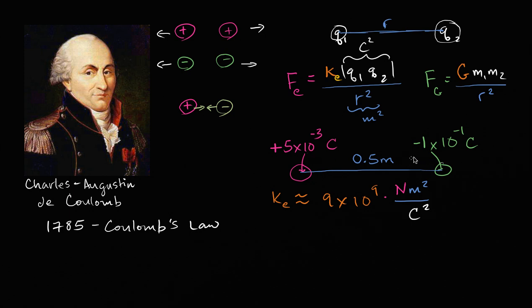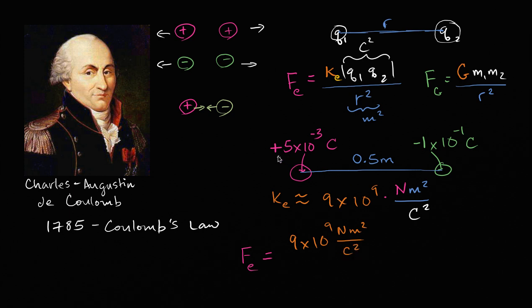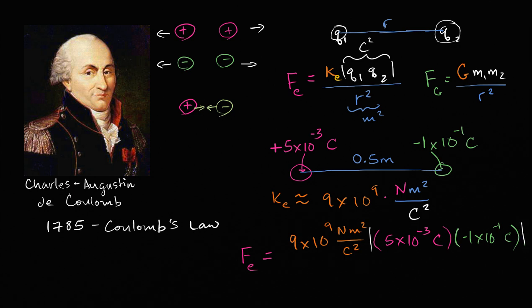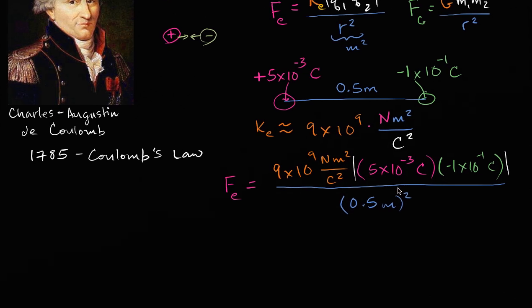Let's apply it to the example. I encourage you to pause the video and try it yourself. It's going to be 9 times 10 to the 9th Newton meters squared over Coulombs squared, times 5 times 10 to the negative 3 Coulombs times negative 1 times 10 to the negative 1 Coulombs — taking the absolute value so the negative goes away — all over 0.5 meters squared.